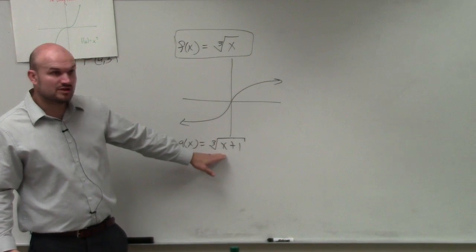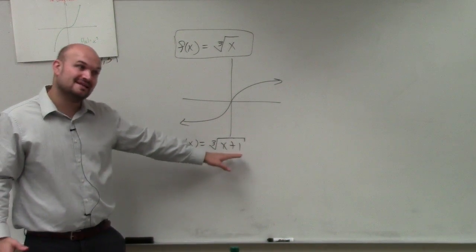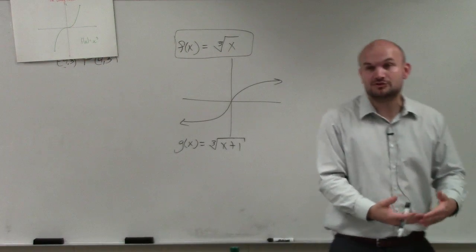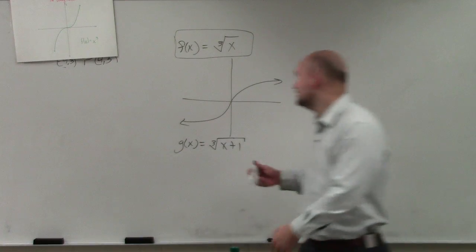Then we see there's only one transformation, which is plus 1. And is that inside the function or outside the function? Inside. So when we're adding inside, that's taking us a horizontal translation, which is going to go to the left.